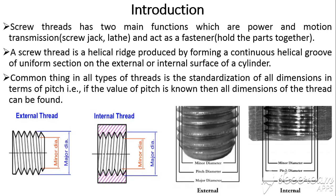If you take a plain cylinder and remove material in the form of a helical coil on the outer diameter, it is called an external thread. If the threads are cut on the internal diameter of a hollow cylinder, it is called an internal thread. In order to know the various dimensions like major diameter and minor diameter, the pitch plays a very important role, as all other measurements of a screw thread can be found from the pitch value.